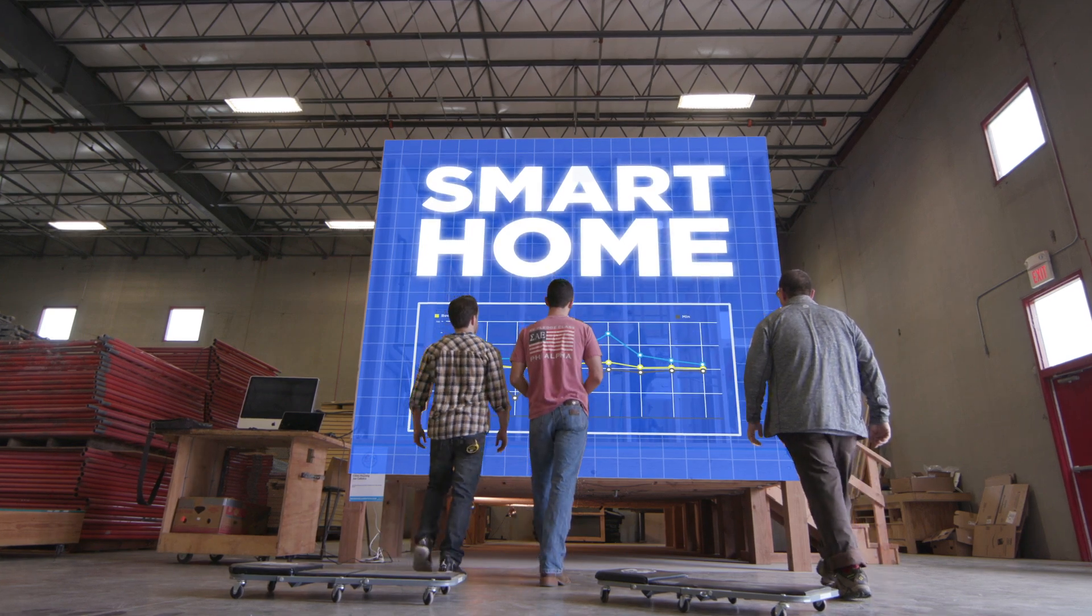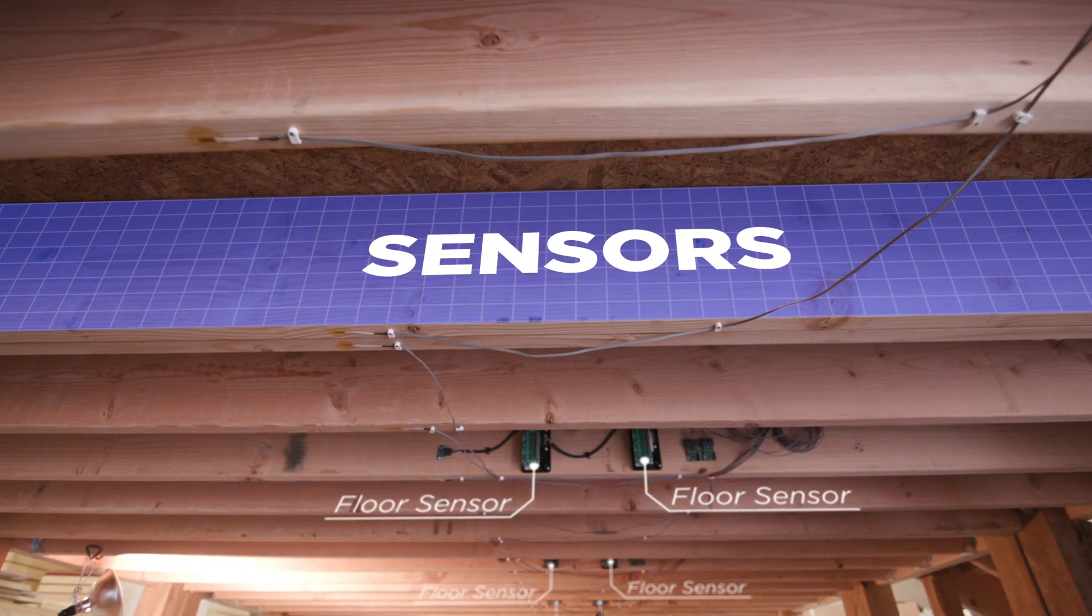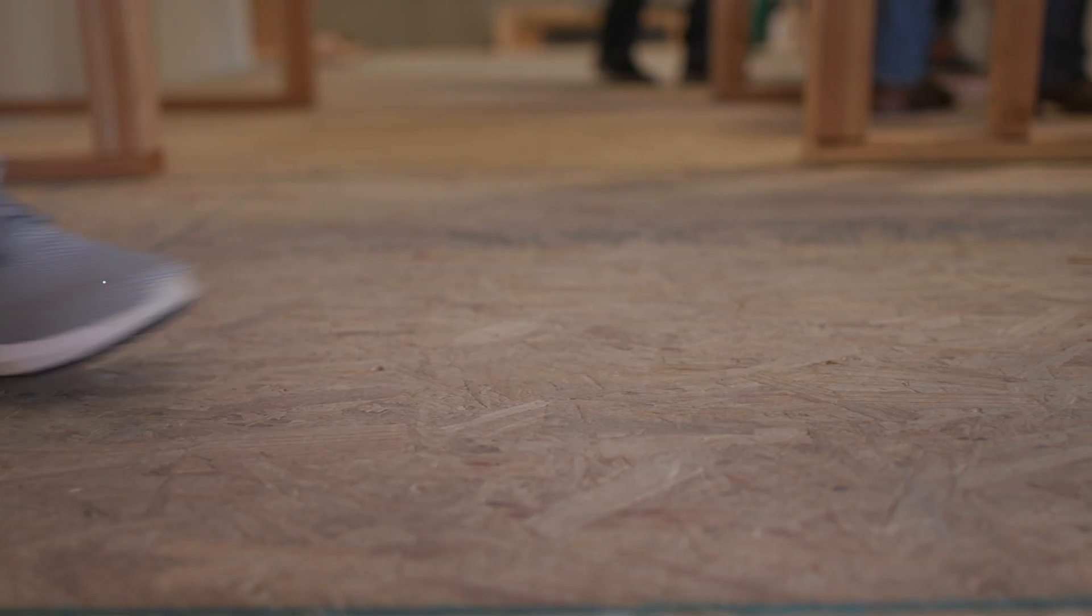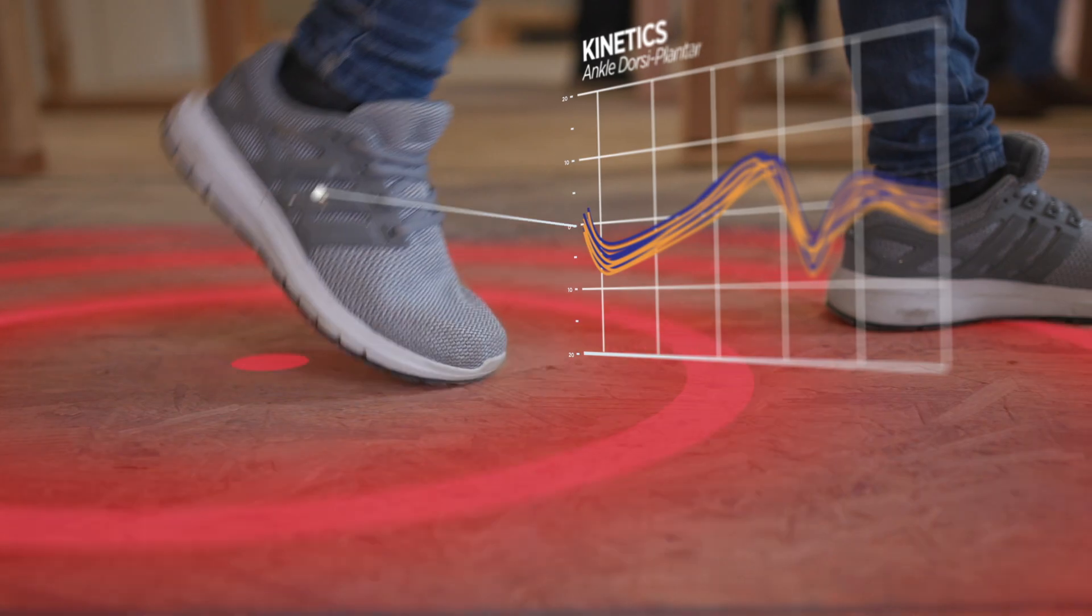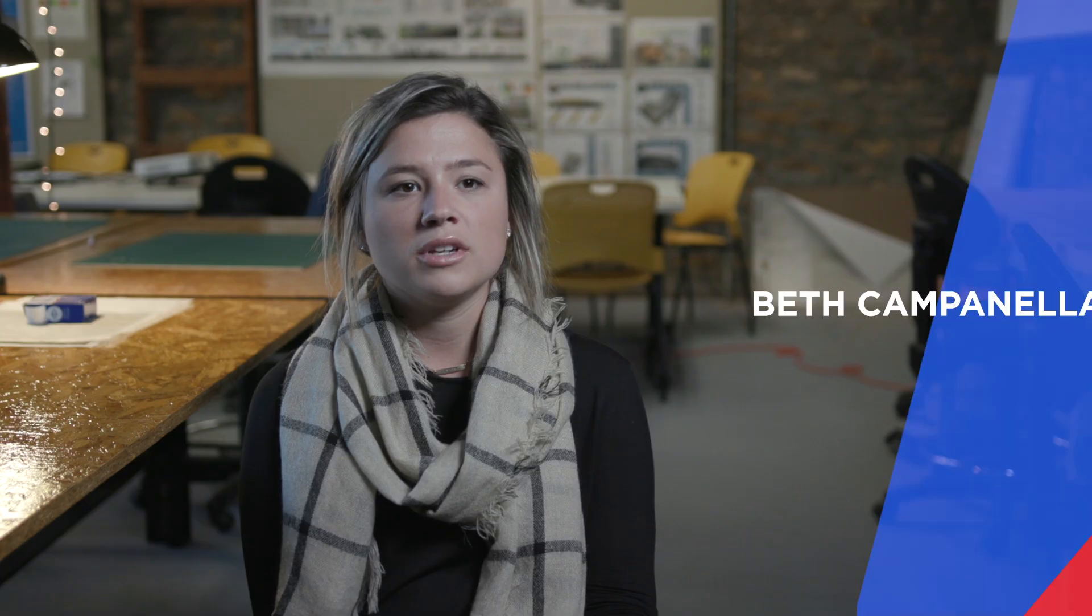We built a mock-up that has really inexpensive accelerometers and strain gauges in the floor. And what we can do is pick up people's heel strike. You can figure out a lot of medical issues that that person could have. It can predict falls. It can predict even signs of Alzheimer's.